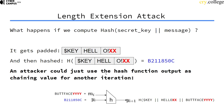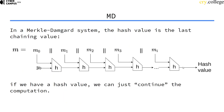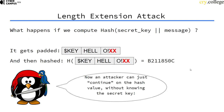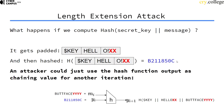If an attacker is on the insecure channel and intercepts the message, without knowing the secret key they can take the hash value — which is just the output of the last chaining value — and use it as the chaining value input to another call of the compression function, adding another message block.